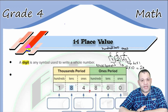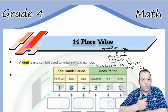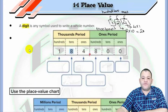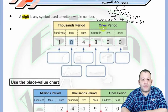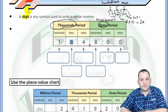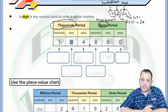For any number, we can divide it into periods. Each period is formed from three digits: ones, tens, and hundreds. The first period is called the ones period, and the second period is called the thousands period. Periods are important to know the place value and the value of each digit, and we also use periods to read numbers.